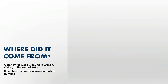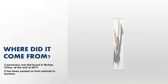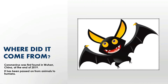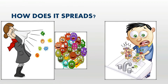Now I will be telling you where the coronavirus originated from. Coronavirus was found in Wuhan, China at the end of 2019. It was passed from animals to humans, but this theory is not confirmed yet.